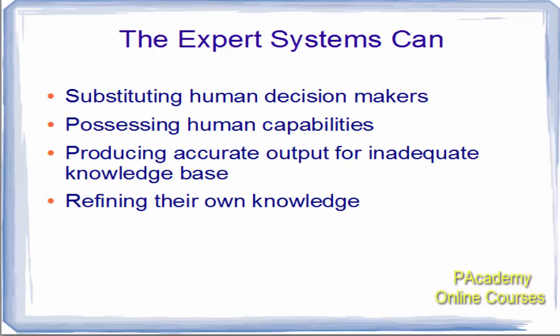Expert systems can substitute human decision makers. They possess human capabilities and produce accurate output even for an inadequate knowledge base. They can also refine their own knowledge.